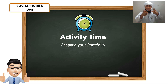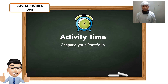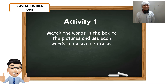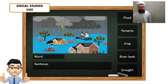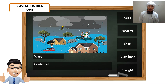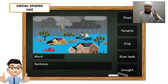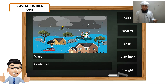Okay. Prepare your portfolios. For this activity, I want you to match the words in the box to the pictures. And use each word to make a sentence. Let's jump into it. There you go. You can see there in the picture. I want you to write the word corresponding to that picture. These are the words. I want you also to use your answer to create a sentence. For this, you don't need to draw the picture. All I want you to do is number it.